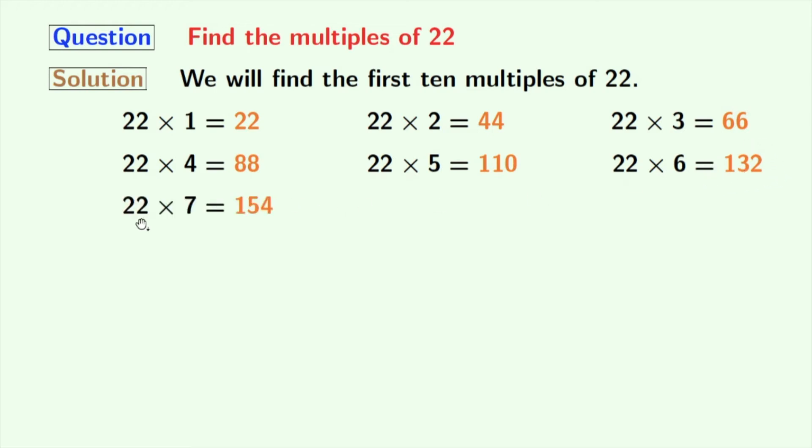Multiplication of 22 and 7 gives us 154. Multiplication of 22 and 8 gives us 176.